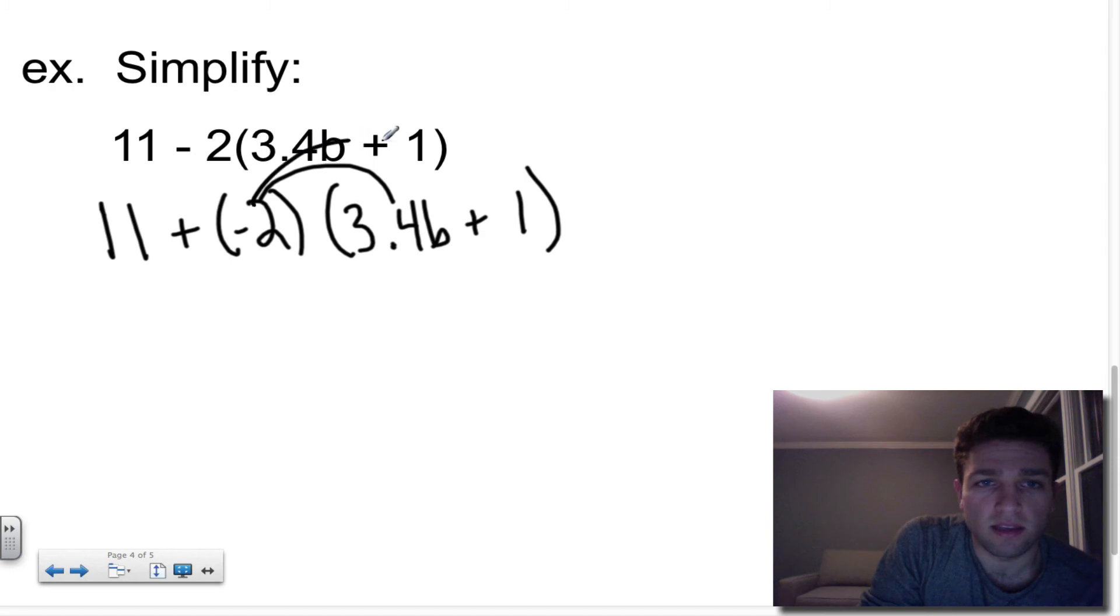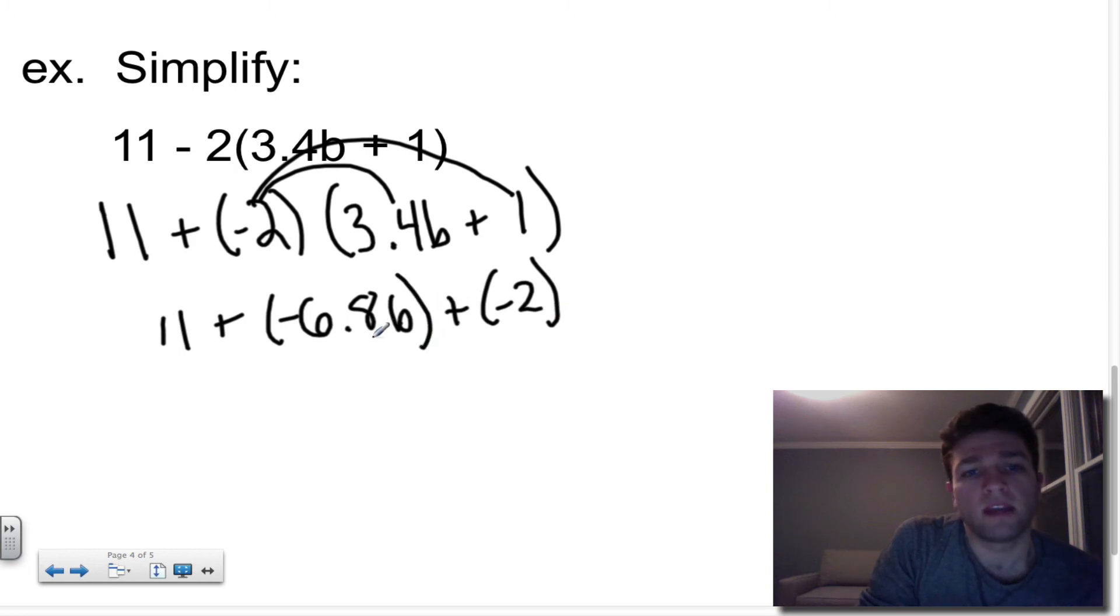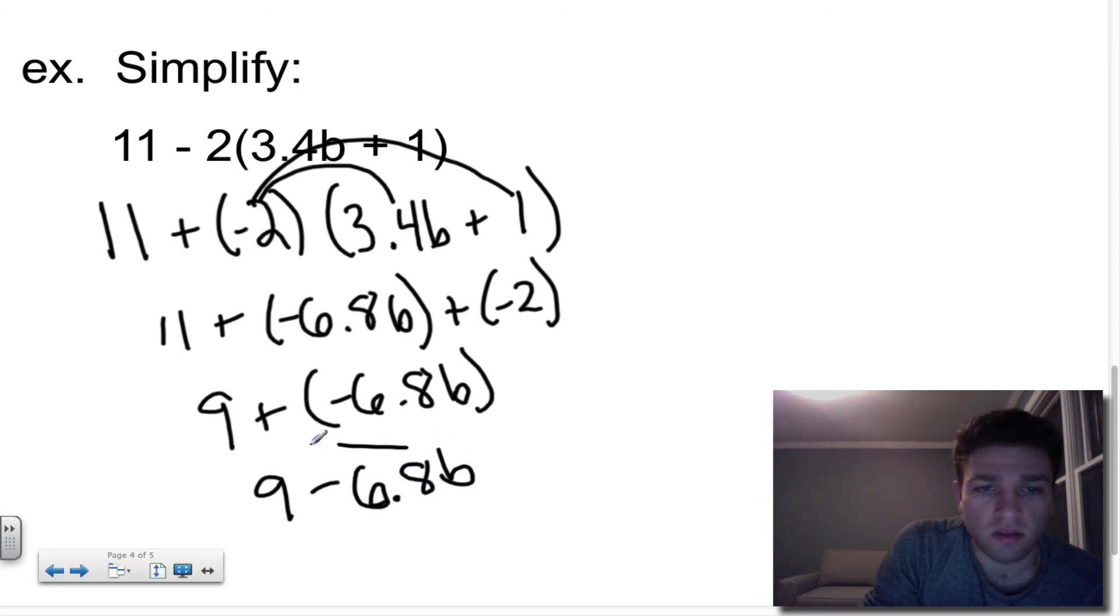So 11 plus negative 2 times 3.4 is really negative 6.8 and then keep your variable of b plus negative 2 times 1 is negative 2. So then I can take this and I can combine my like terms. So I see 11 and I see negative 2. So 11 plus negative 2 is really 9. So I have 9 plus negative 6.8b. And some people don't like leaving it like that, so they can change it back to subtraction.